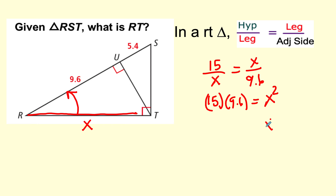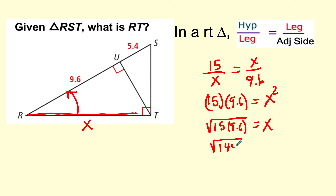If we take the square root of both sides, using a calculator: square root of 15 times 9.6. The answer is 12 because 15 times 9.6 equals 144. Therefore the value is 12, so this side is 12.